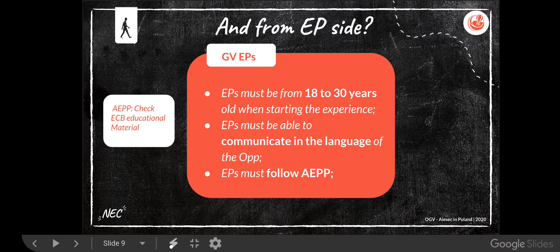There are also rules towards the EP as well. When you are selling the opportunity to someone, the person has to be between 18 and 30 years old. The EP must be able to communicate in the language of the opportunity — in my understanding that's around B1 or B2 level. EPs must follow the AEPP. There's a note on the left side: check ECB educational material — that's a piece of material where you can find more information about it.